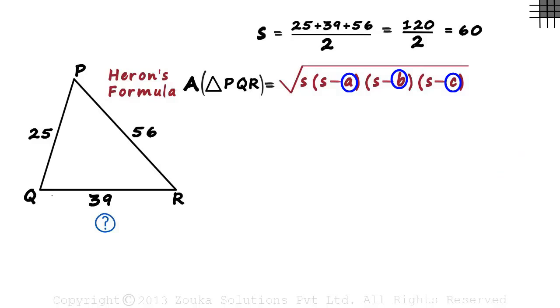In this case, S is 60, A can be 25, B 39 and C 56 units.